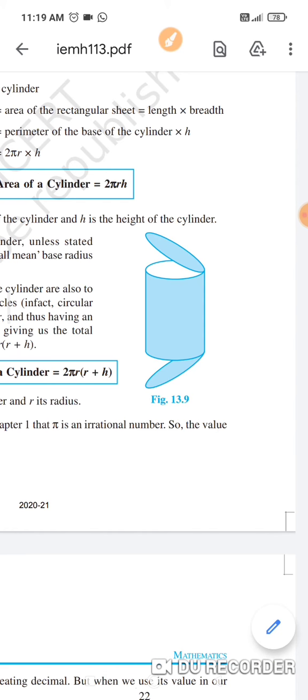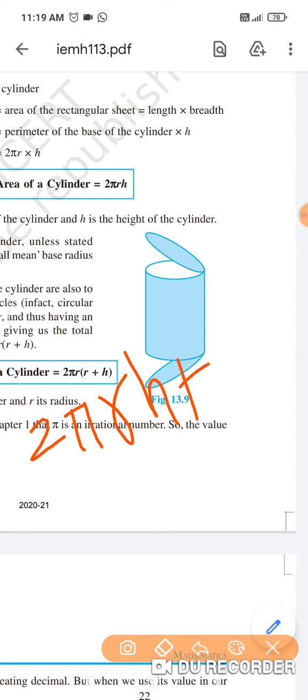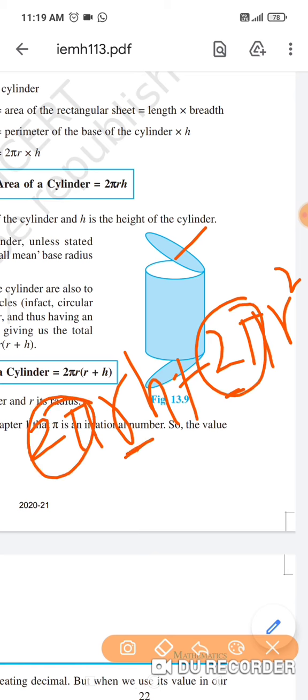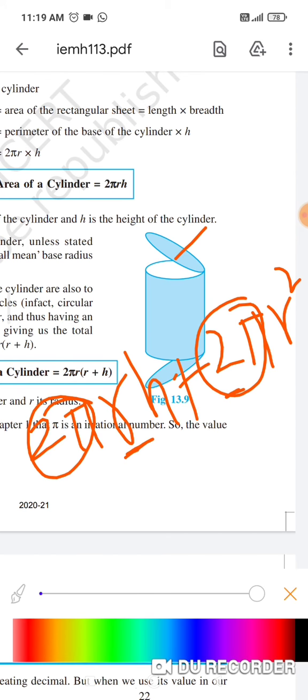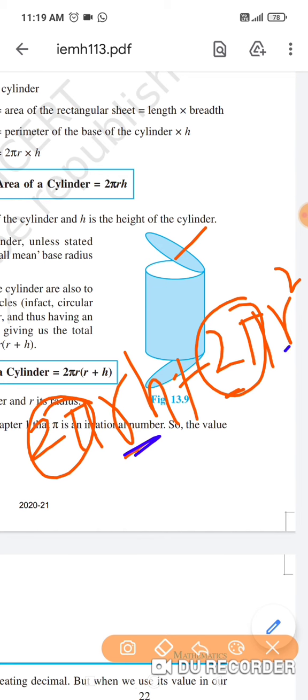So shortcut, we write the 2πr plus... πr² is... two multiply... So we will add 2π, and the 2π same, I have 2πr, 2πr².